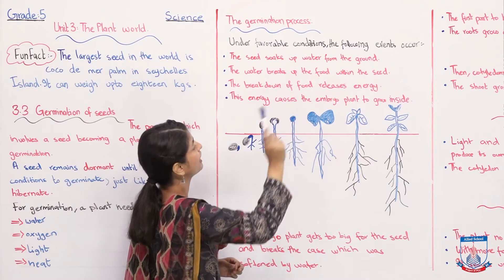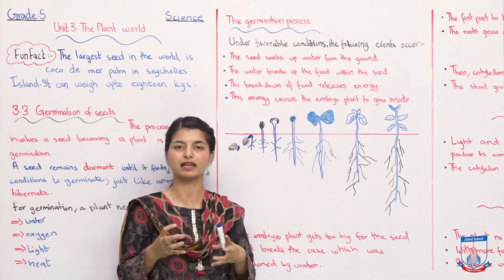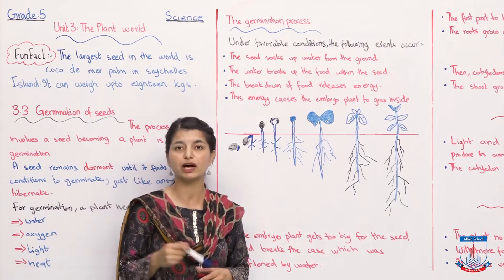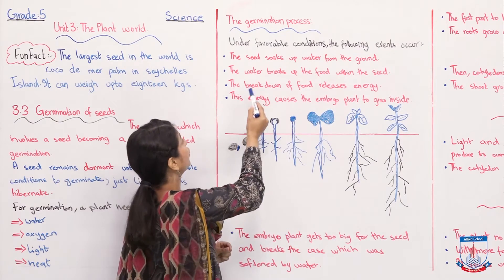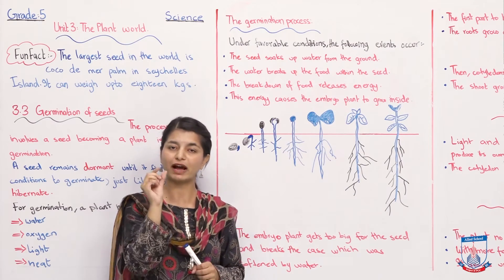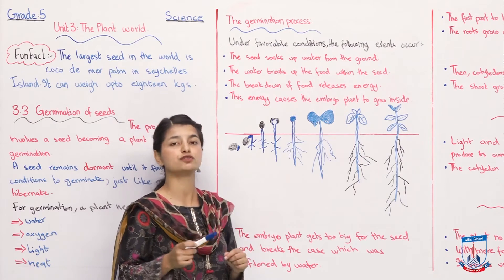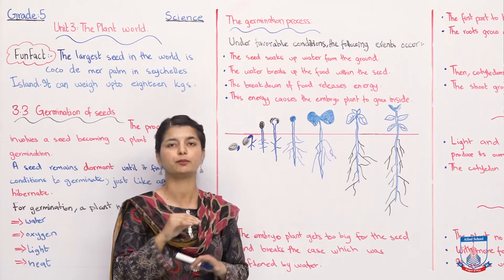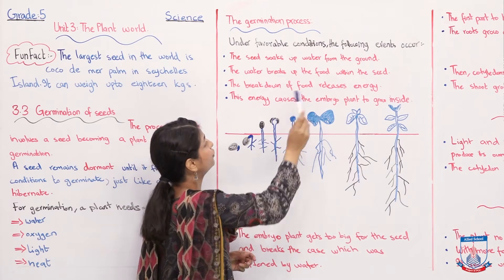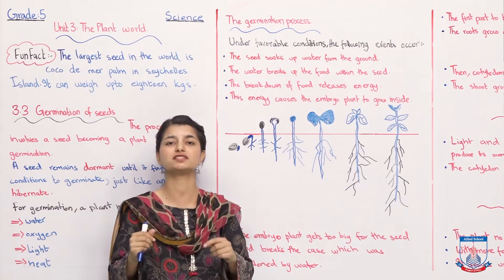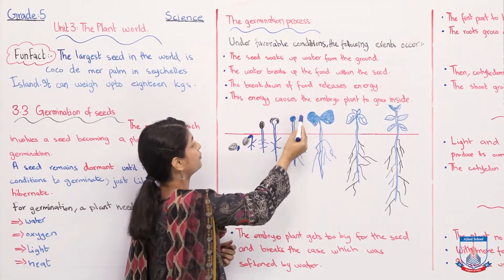Under favourable conditions, the following events occur. First, the seed soaks up water from the ground — water is absorbed into it from rain or natural sources. The water softens and breaks down the food stored within the seed, and the breakdown of the food releases energy. This energy is very important for embryo growth — it causes the embryo plant to grow inside the seed.